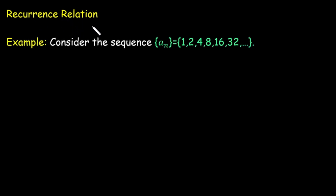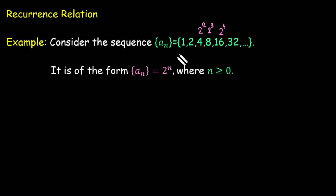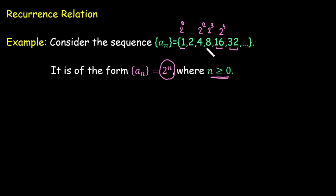Before moving to the definition, let's take an example. Suppose we have the sequence a(n): 1, 2, 4, 8, 16, 32, and so on. Observing the pattern: the first term is 1, the second is 2, next is 2 squared, then 2 cubed, then 2 to the power 4, and so on. So the sequence is of the form 2 raised to power n, where n is greater than or equal to 0.